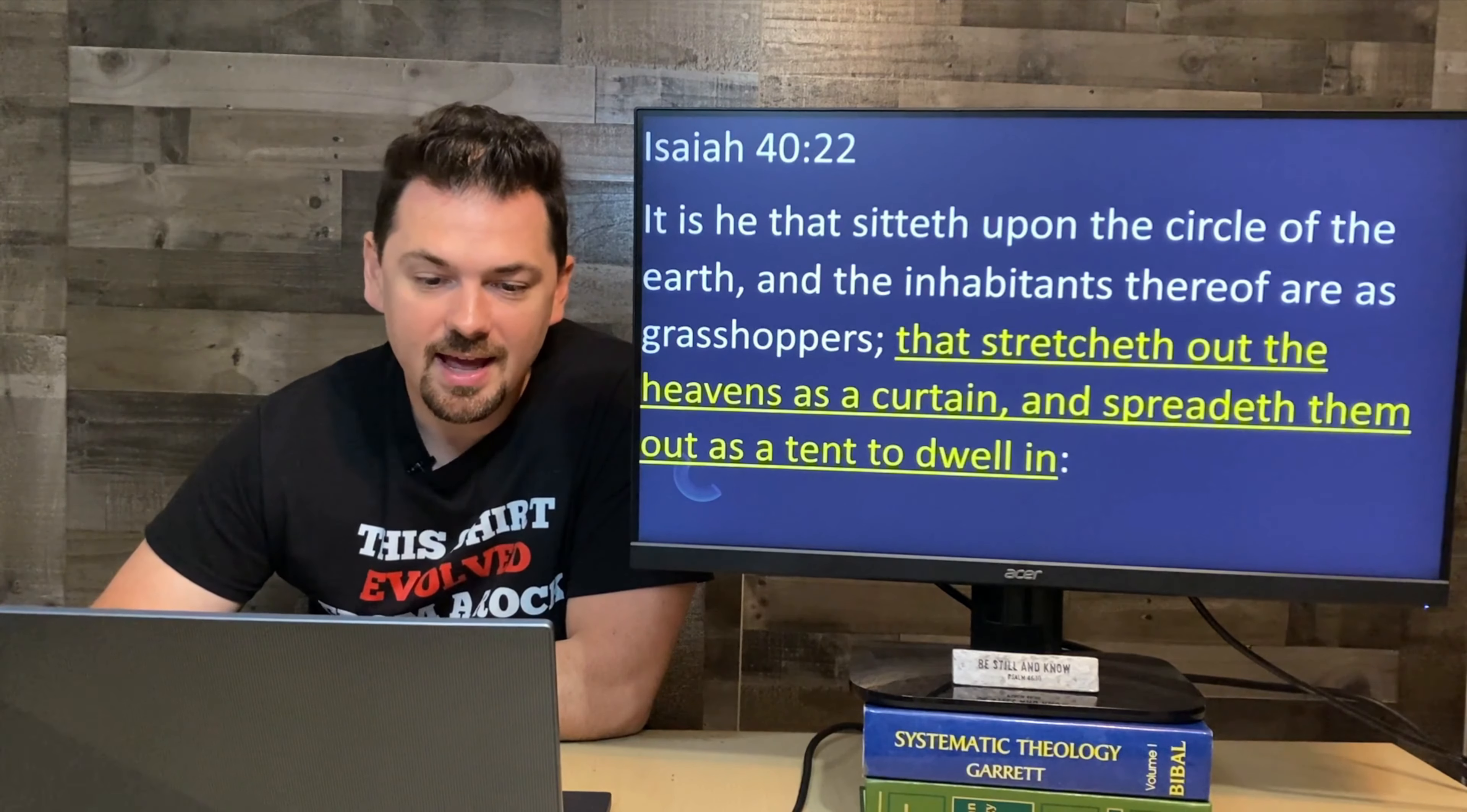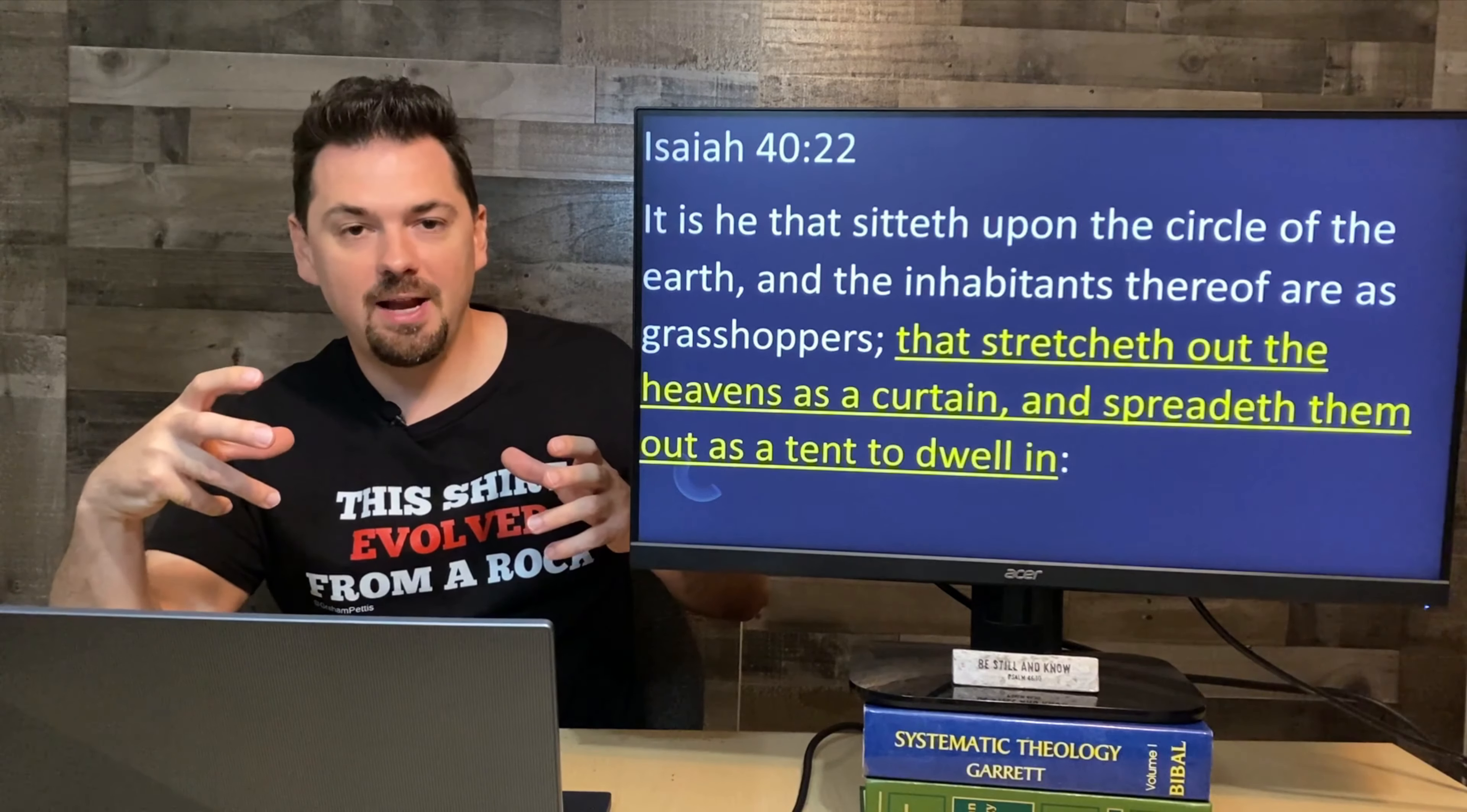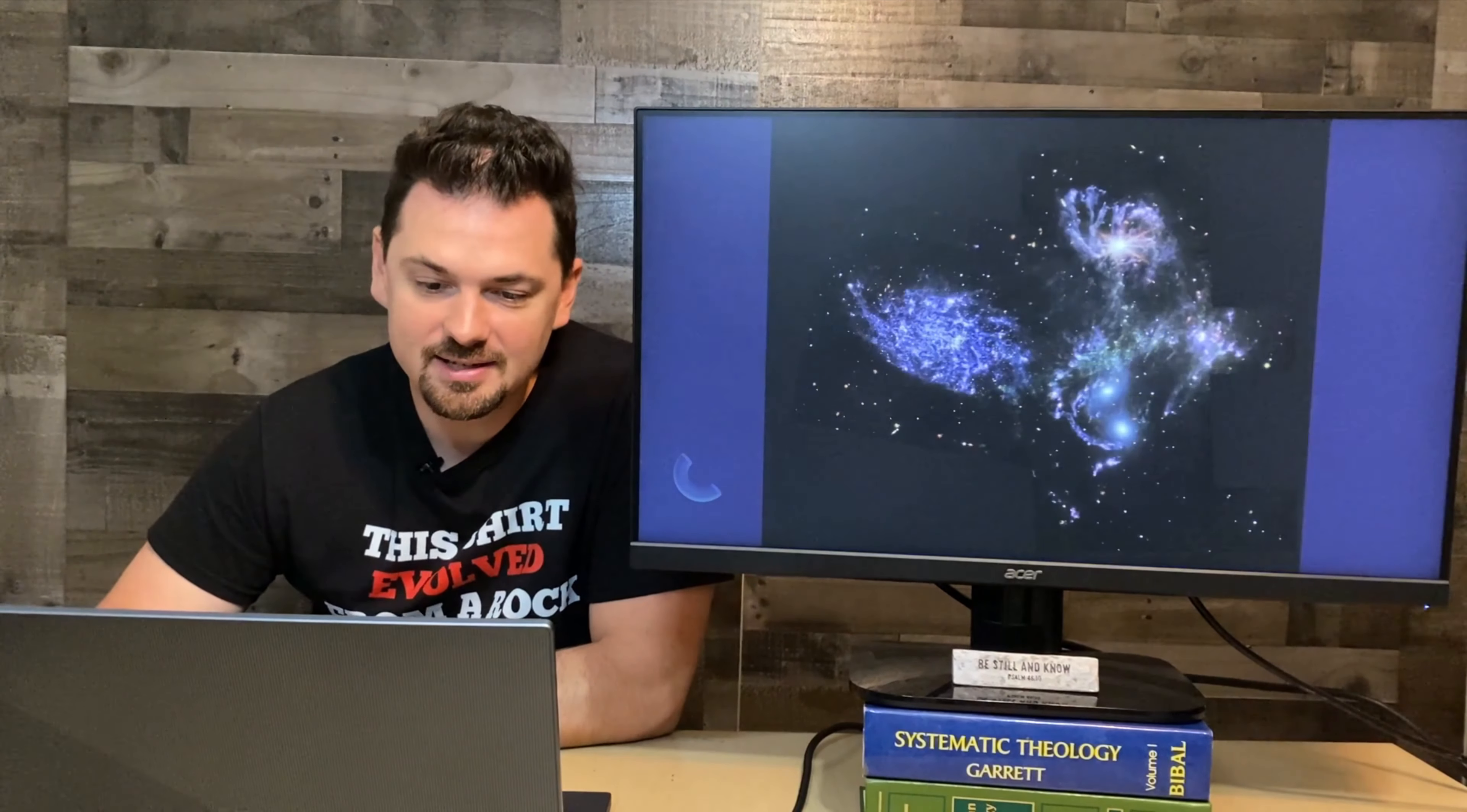Isaiah 40:22 says, it is he that sitteth upon the circle of the earth, and the habitats thereof are as grasshoppers, that stretcheth out the heavens as a curtain, and spreadeth them out as a tent to dwell in. I just get goosebumps reading these scriptures. This all-powerful, omniscient, omnipotent, omnipresent being, just being able to create everything. Just like that. It's quite terrifying if you think about it. It's amazing how God can just snap his fingers and it's all gone.